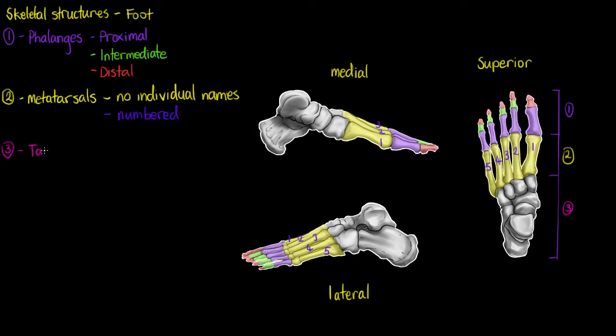So that leaves us with our third and last segment that we divide the foot into, which is those tarsal bones. Now as opposed to the carpals, we only have 7 tarsal bones. In our hand we have 8 carpals, in our foot we have 7 tarsals. And we'll have a look at them now.